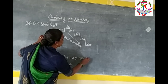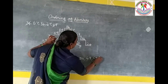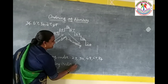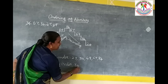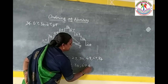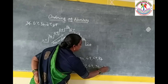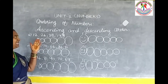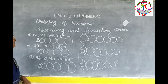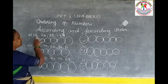In ascending order: 27, 34, 49, 67, 84. In descending order: 84, 67, 49, 34, and 27. We have written these numbers in ascending and descending order.